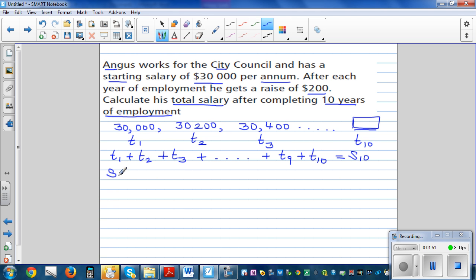The sum of n terms, the first n terms, is given by this formula: n over 2 times 2a plus n minus 1 times d.